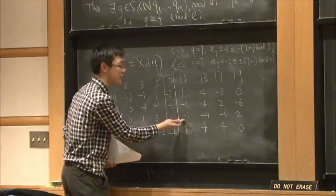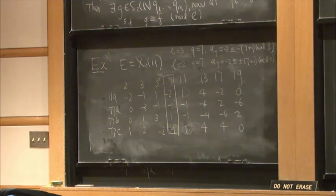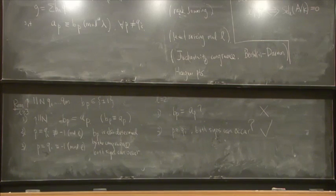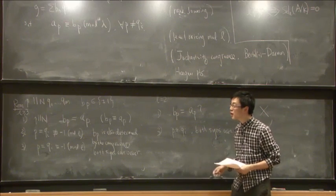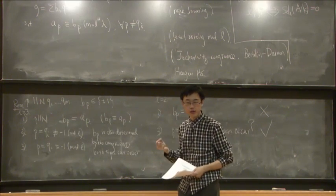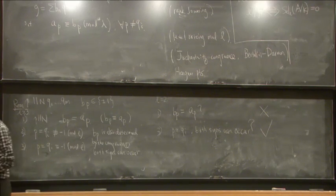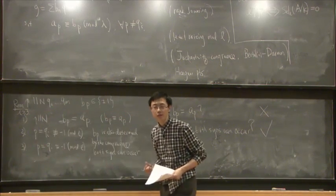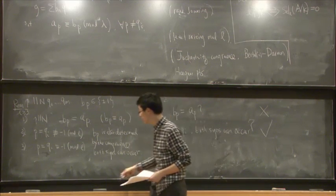I will now state the first main theorem, which generalizes Ribet's theorem and Diamond-Taylor's theorem to the case L equals 2, allowing simultaneous level raising at several primes and describing what signs can occur at primes dividing exactly N and at the level-raising primes.